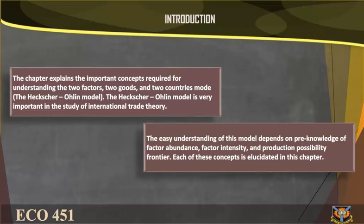Introduction. The chapter explains the important concepts required for understanding the two-factors, two-goods, and two-countries model — the Heckscher-Ohlin model. The Heckscher-Ohlin model is very important in the study of international trade theory. Easy understanding of this model depends on prior knowledge of factor abundance, factor intensity, and the production possibility frontier, each of which is elucidated in this chapter.